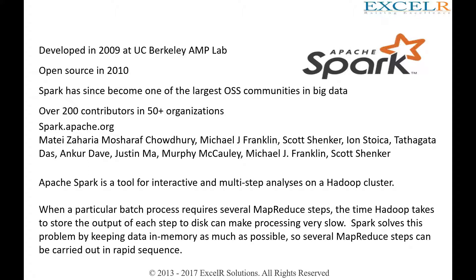Spark was open-sourced in 2010, and as soon as it got open-sourced, it became the biggest and most famous project for Apache. It is called an interactive tool and it can work both on MapReduce and on general purpose — meaning your data can be sitting in HDFS or it can be sitting in your local system.